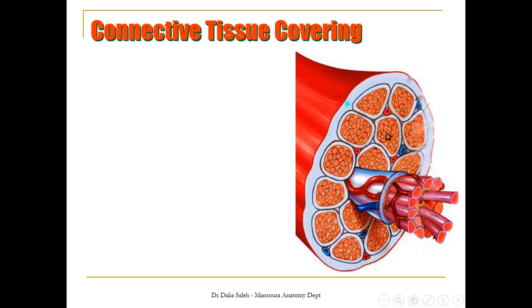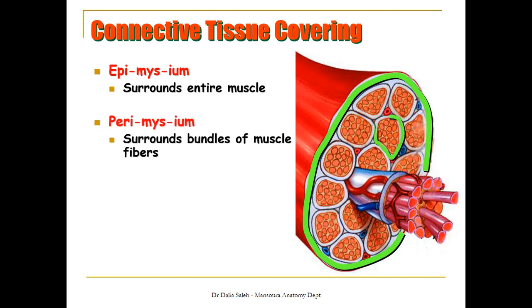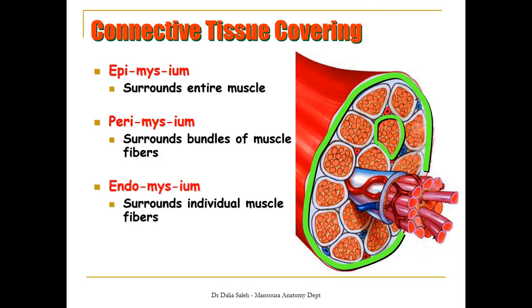This diagram shows a section through skeletal muscle. It is made of muscle bundles, and each bundle contains individual muscle fibers. The outer covering of the whole skeletal muscle is called the epimysium — a connective tissue layer covering the entire muscle. Around each muscle bundle is the perimysium, the connective tissue surrounding the bundles of muscle fibers. The third type is the endomysium, which surrounds the individual muscle fibers. So from outside to inside: epimysium covers the whole muscle, perimysium surrounds the muscle bundles, and endomysium surrounds the individual muscle fibers.